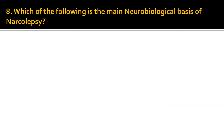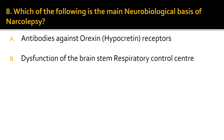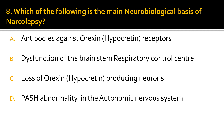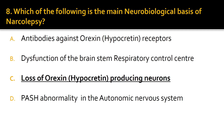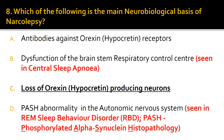Question 8. Which of the following is the main neurobiological basis of narcolepsy? The correct answer is C: loss of orexin or hypocretin-producing neurons is the main neurobiological basis of narcolepsy. B is incorrect because this is a dysfunction seen in central sleep apnea. D is incorrect because PASH abnormality in the autonomic nervous system is seen in REM sleep behavior disorder. PASH stands for phosphorylated alpha-synuclein histopathology.